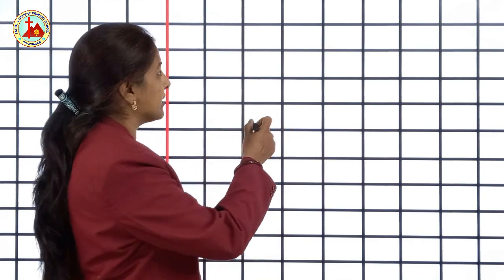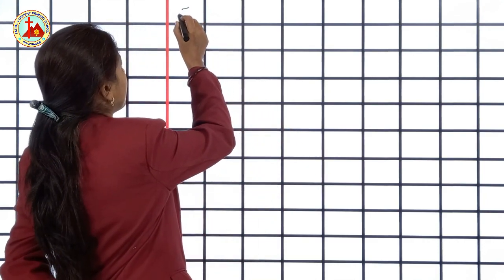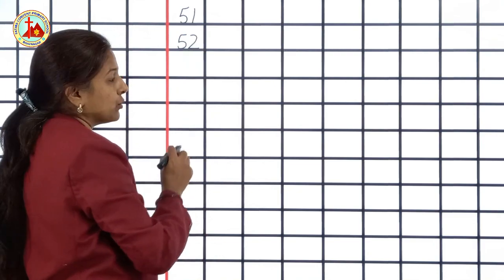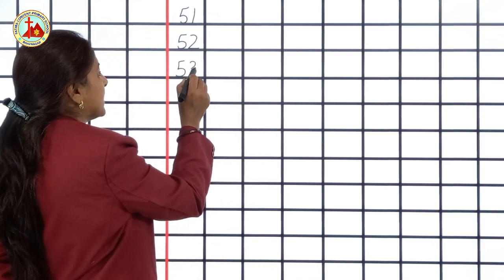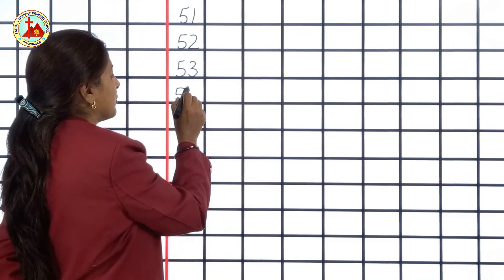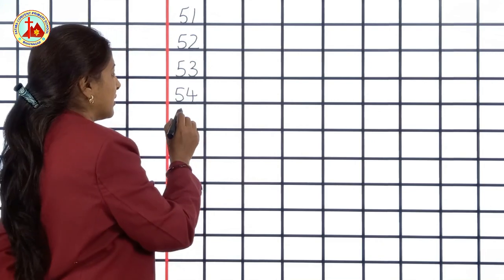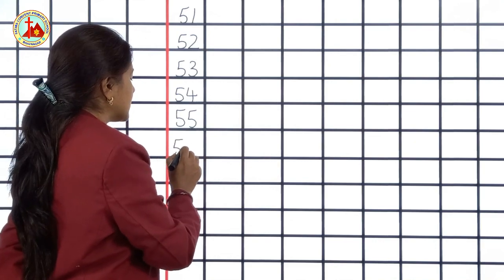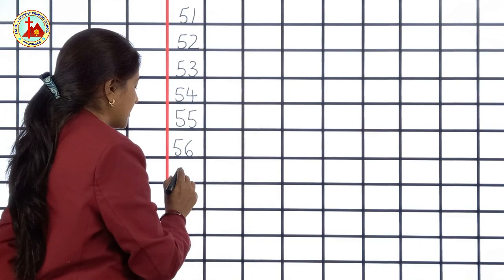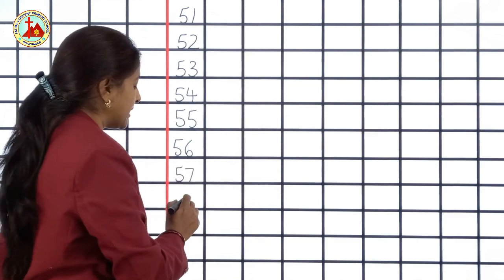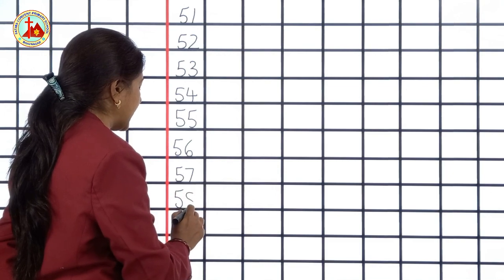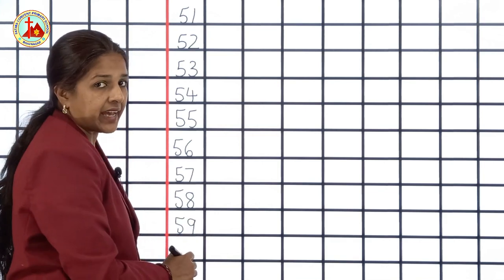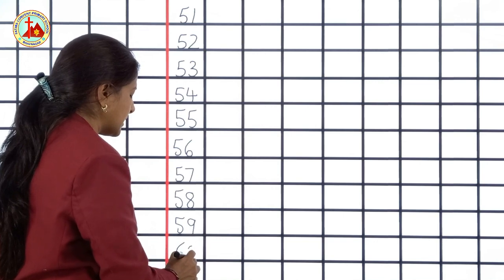Leave 1 line and write 51, 52, 53, 54, 55, 56, 57, 58, 59 and last 60.